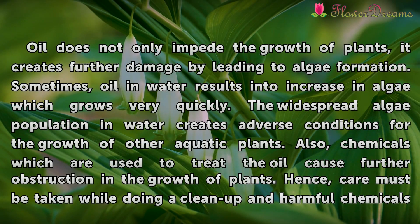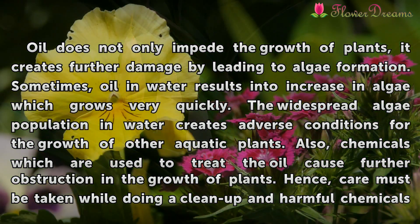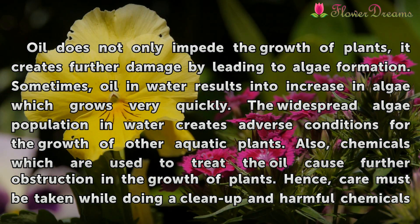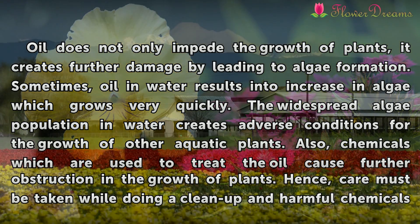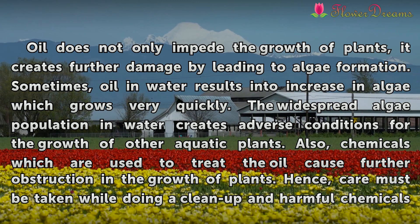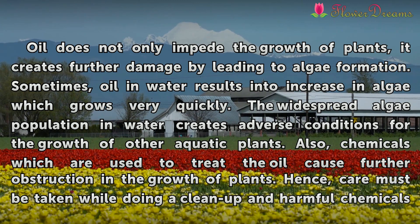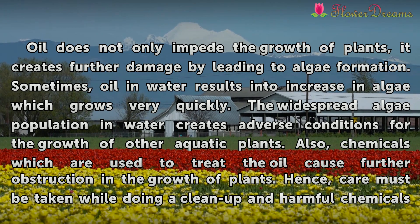Oil does not only impede the growth of plants; it creates further damage by leading to algae formation. Sometimes, oil and water results in an increase in algae, which grows very quickly. The widespread algae population in water creates adverse conditions for the growth of other aquatic plants. Also, chemicals which are used to treat the oil cause further obstruction in the growth of plants.